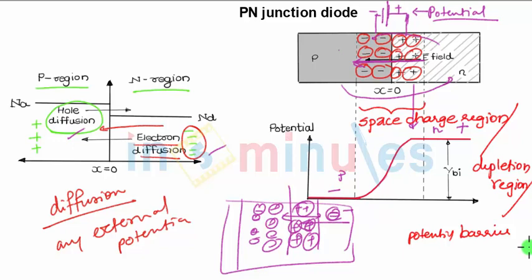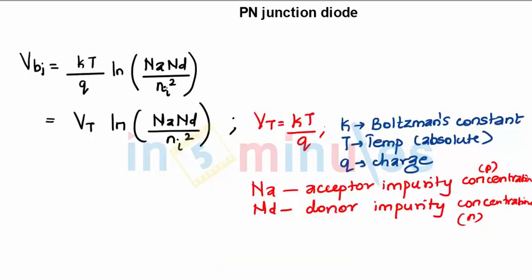Now because of the electric field in the space charge region, there is potential difference which is created over here. This is the potential difference which is created. Now how to calculate this potential region? This is nothing but the potential difference which is created between the P and N type. Now how to calculate this value?